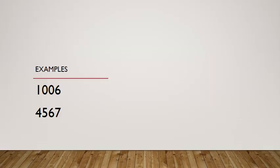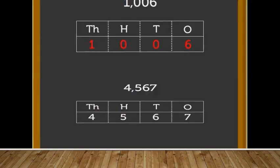Now we have learned about five different ways to represent a 4-digit number. Here are examples: 1006 and 4567. We are representing these in the place value chart.